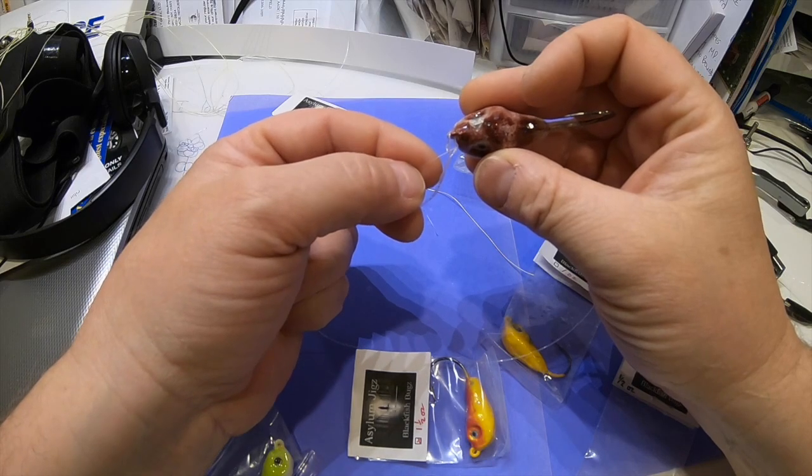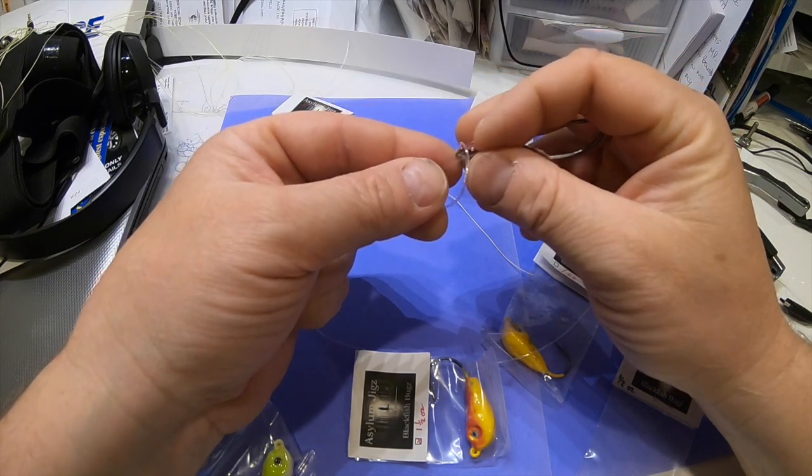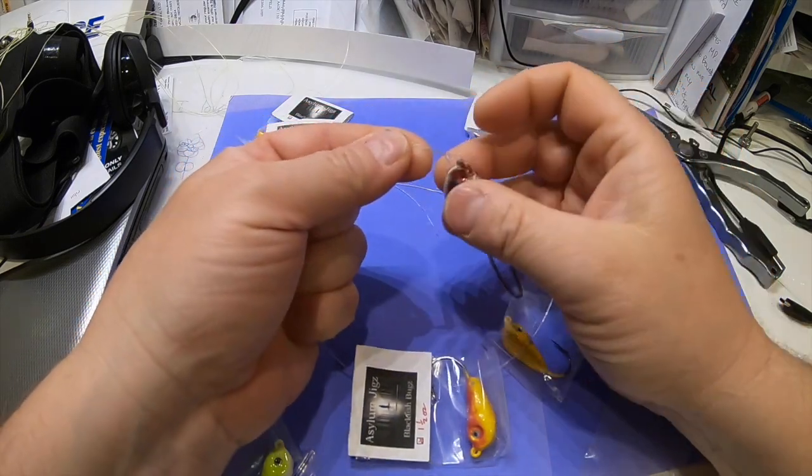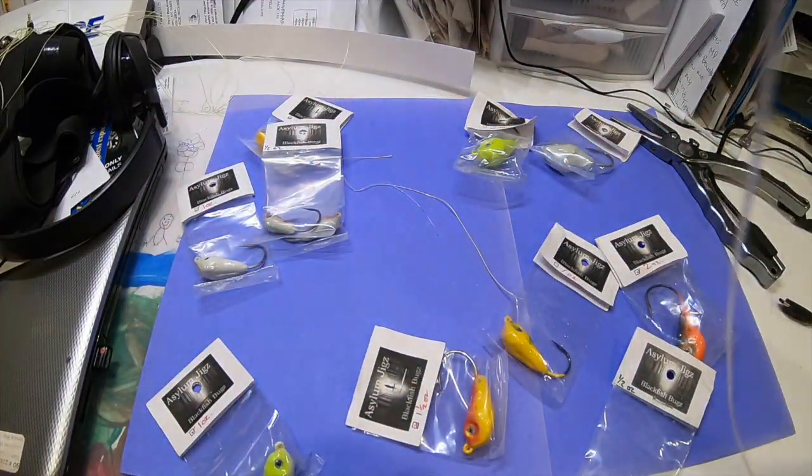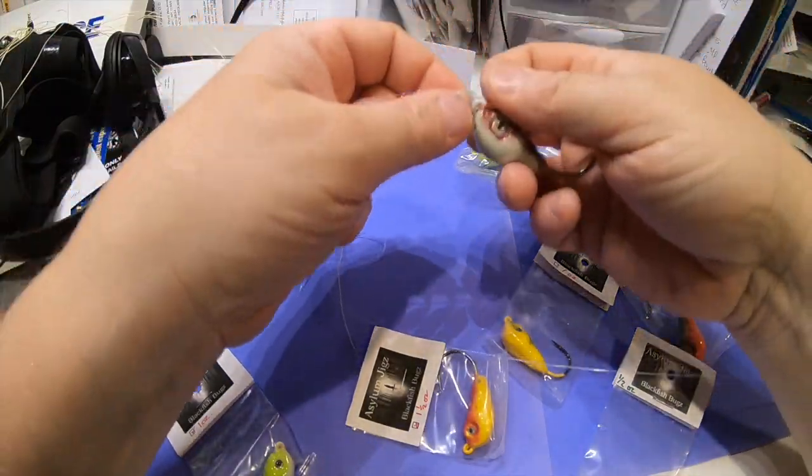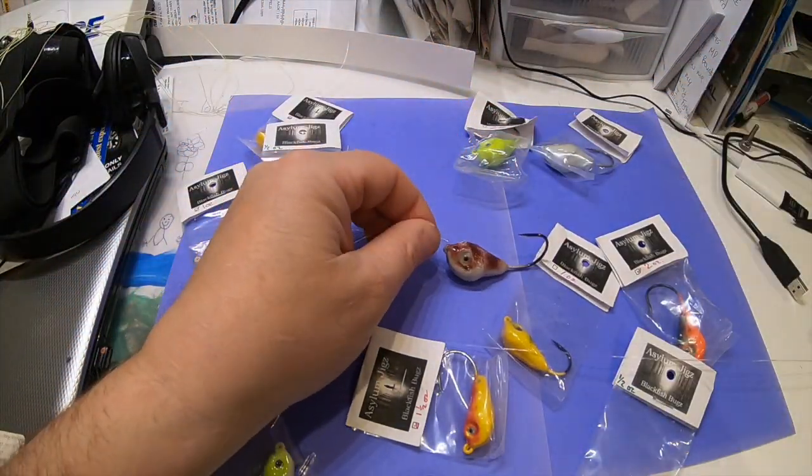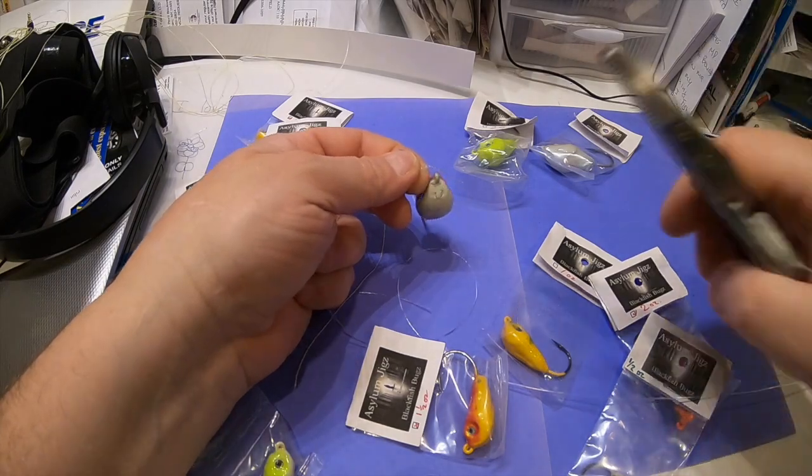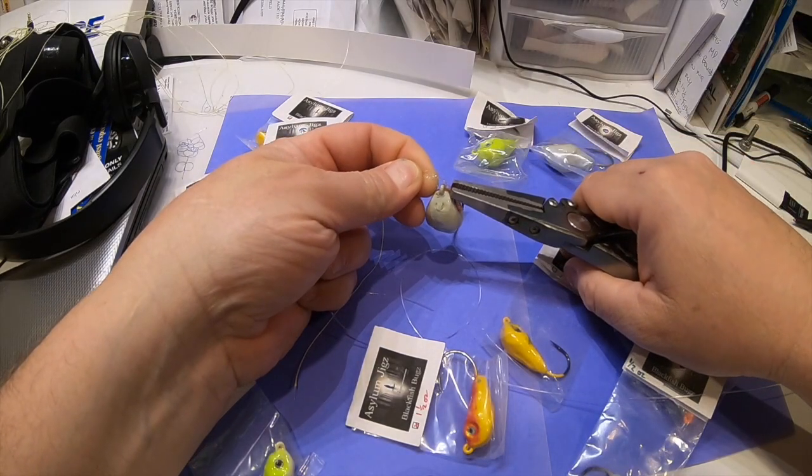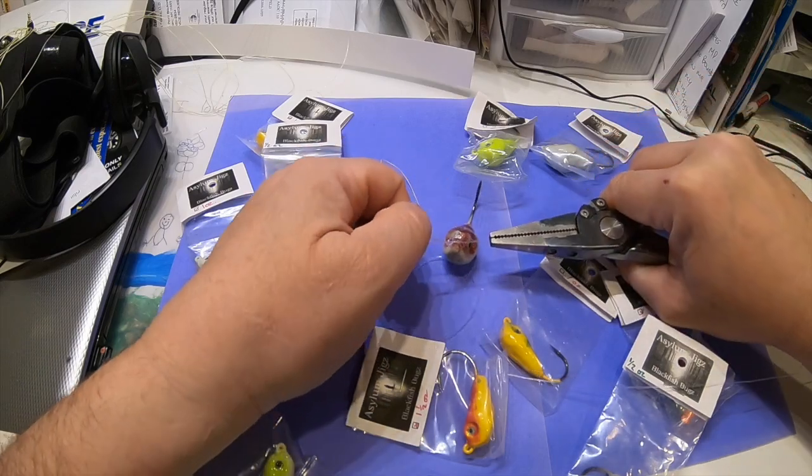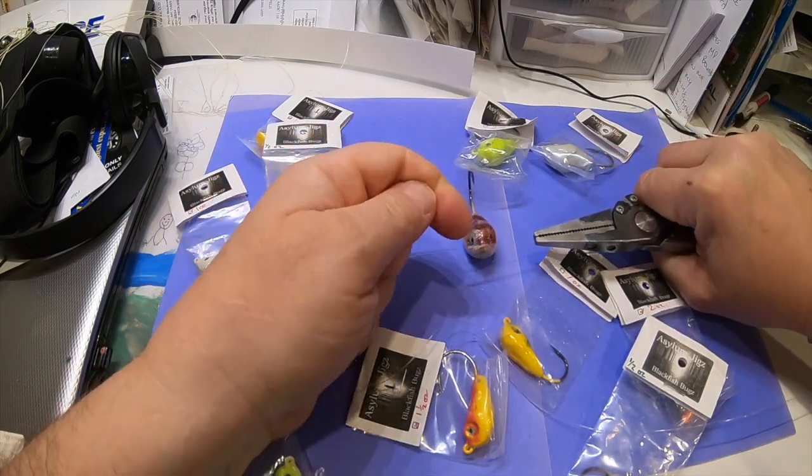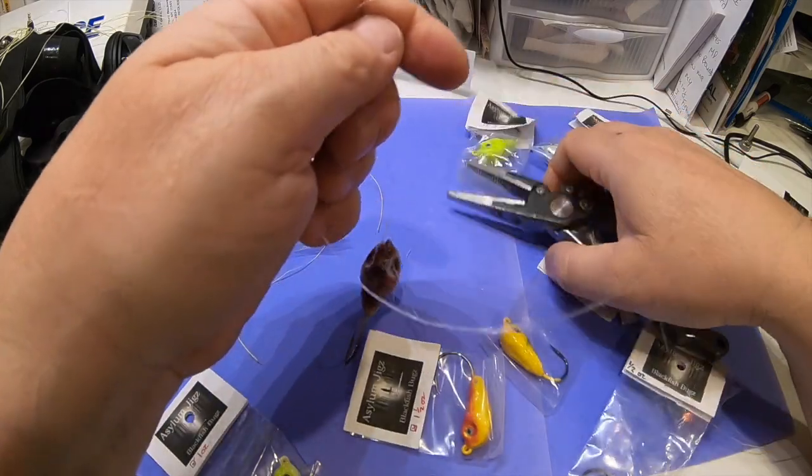Now I'm going to take my tag end and I'm going to go through both loops that I just made, making sure that it goes through the original half hitch loop, and I'm going to pull that tight. I'm going to wet it.